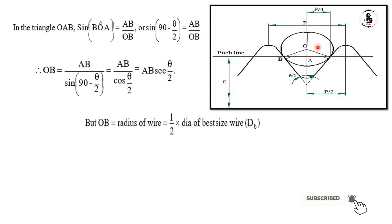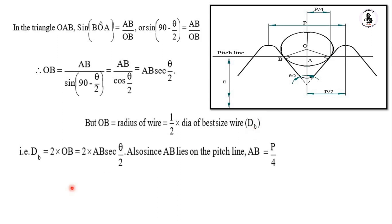OB is nothing but the radius of the hardened steel wire, or you can say one half times the diameter of the best size wire, noted as capital Db where small b stands for best wire size. So db equals twice OB, meaning we multiply OB by 2: capital Db equals 2 times OB. Substituting the value of OB, we get 2 times AB times sec(theta by 2).